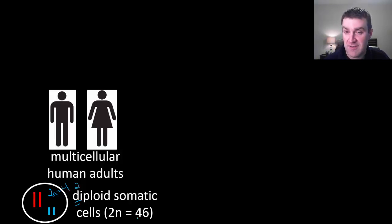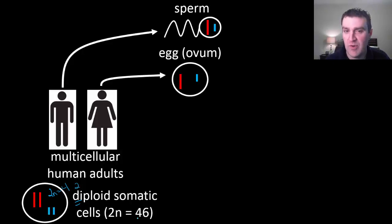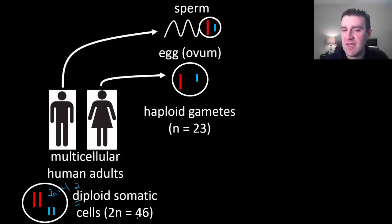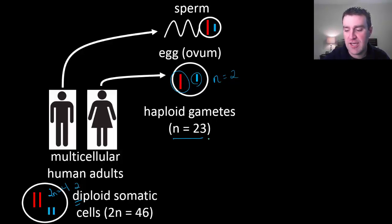Remember that there are specific diploid cells in our sex organs — either testes if you're male or ovaries if you're female — that undergo a process to make the sex cells: sperm if you're male, or egg if you're female. If you ever see the term ovum, or ova as the plural, that's still the female egg. We call those gametes generally, and those are haploid cells. Here we're seeing one of each chromosome, so we would say n equals 2 for this drawing, or in humans that number is 23 — just 23 total, without pairs.